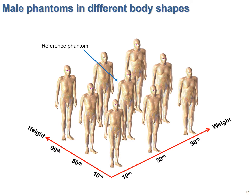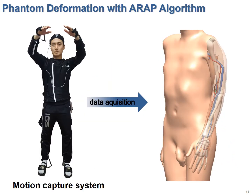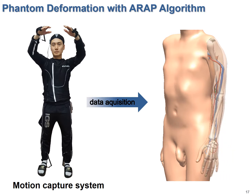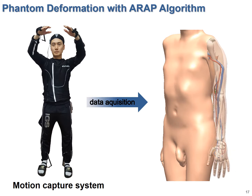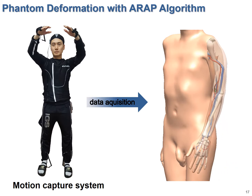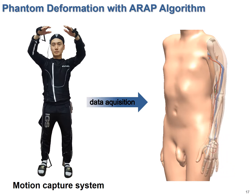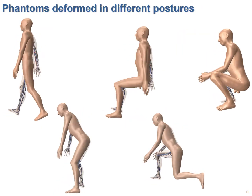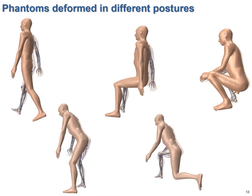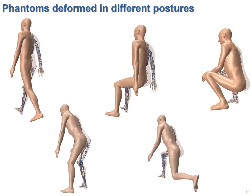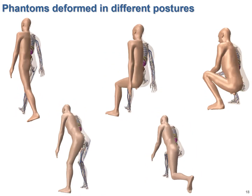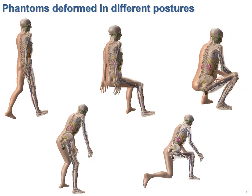Also, thanks to the deformability of the mesh type phantoms, we are now developing phantom libraries for adult male and female, which includes about 250 different body shapes for each. These are the eight sample deformed adult male phantoms. Also, by using algorithms to deform mesh type geometries which are being widely used in animation movies, we are developing a program to change the posture of the mesh type reference phantoms according to data obtained from a motion capture system. These are the phantoms deformed into different postures. The capability of the mesh type reference phantoms to be easily deformed into different body shapes and postures implies their potential to be used in other fields such as medical applications, dose reconstruction, or radiation accidents.